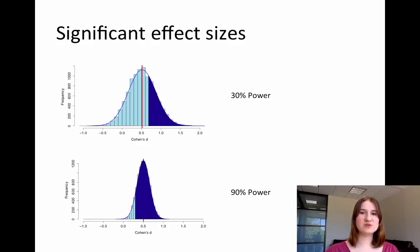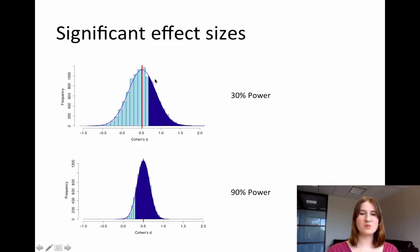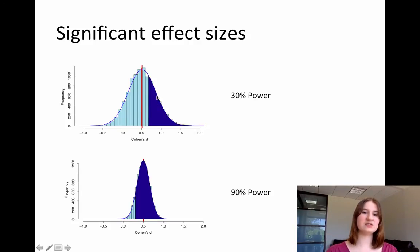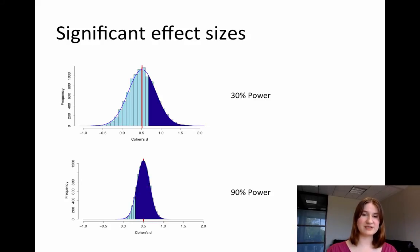If studies have 30% power, effect sizes in the non-shaded area may be obtained but won't get published, making them very hard to find. The published studies, being more likely to show significant results, are mostly going to be from the significant tail of the curve. So the individual effect size estimates are going to be greater than the true value — they're going to be inflated. At 90% power, effect sizes at or even below the mean true effect size can at least get published.